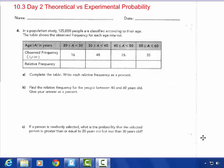Today's lesson, 10.3 Day 2, Theoretical vs. Experimental Probability. This is in your Volume B book, Chapter 10.